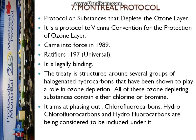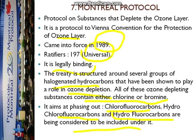The seventh one is the Montreal Protocol, an international treaty which aims to protect the ozone layer by phasing out the production of numerous substances responsible for ozone depletion. It came into force in 1989 and is also a universal protocol, just like the Vienna Convention. It is legally binding. The treaty is structured around several groups of halogenated hydrocarbons that play a role in ozone depletion, all containing either chlorine or bromine. Substances containing only fluorine do not harm the ozone layer. It aims at phasing out chlorofluorocarbons (CFCs). Hydrofluorocarbons (HFCs) are being considered for inclusion, but HFCs do not harm the ozone layer — they are however harmful as a greenhouse gas.